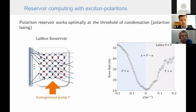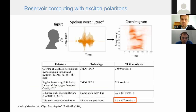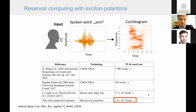At the limit of a very large lattice we achieve 95% accuracy. Importantly, because of the high non-linearity of polaritons and very short time scales on the order of picoseconds, we predict the system can be quite efficient. For example, in the task of spoken word recognition, our system could in principle perform tasks orders of magnitude faster than other systems considered so far.